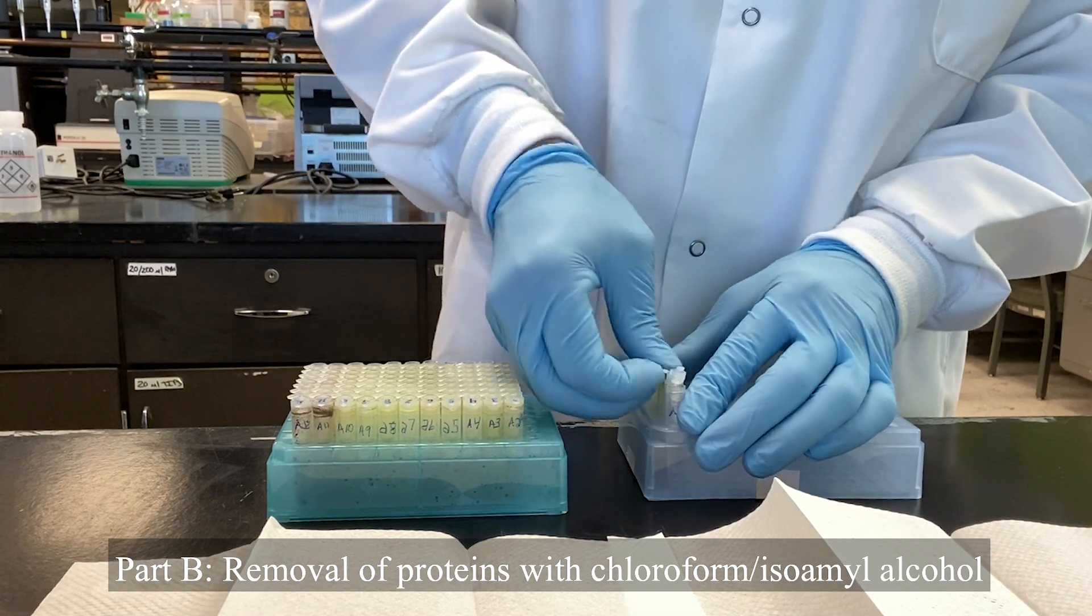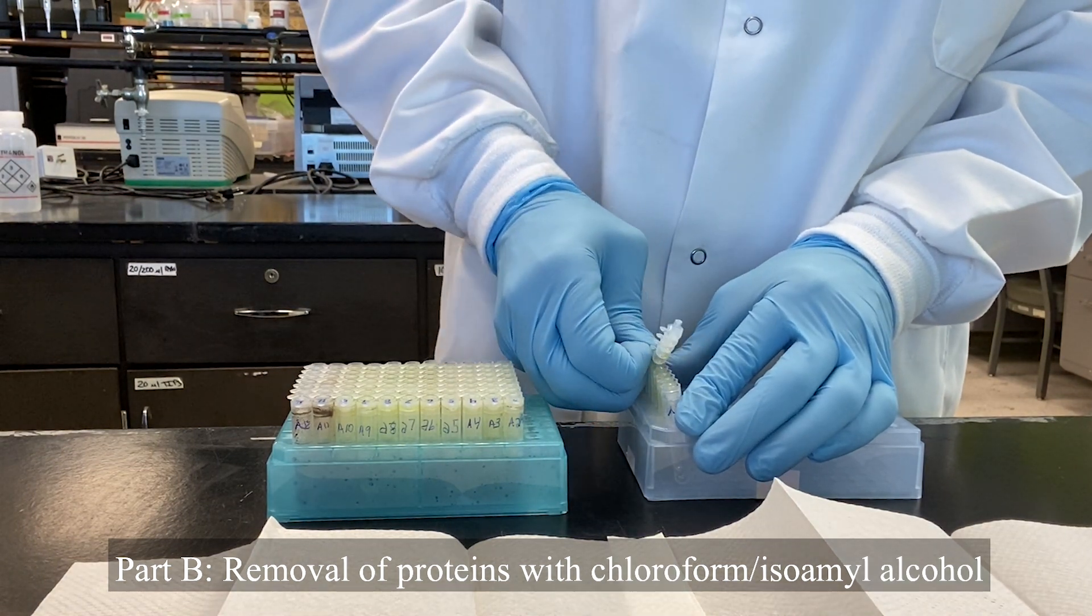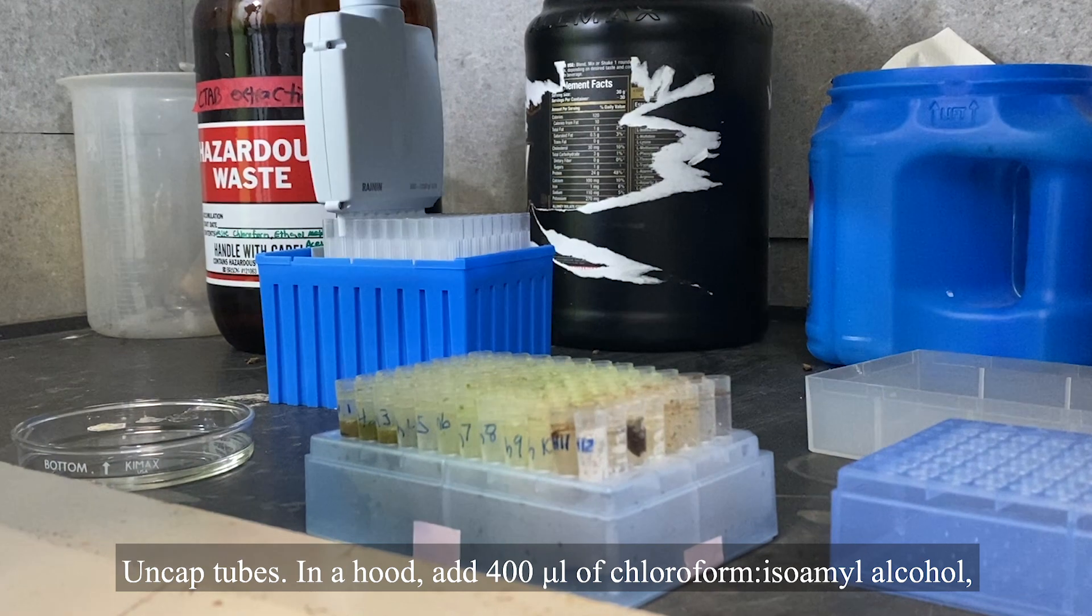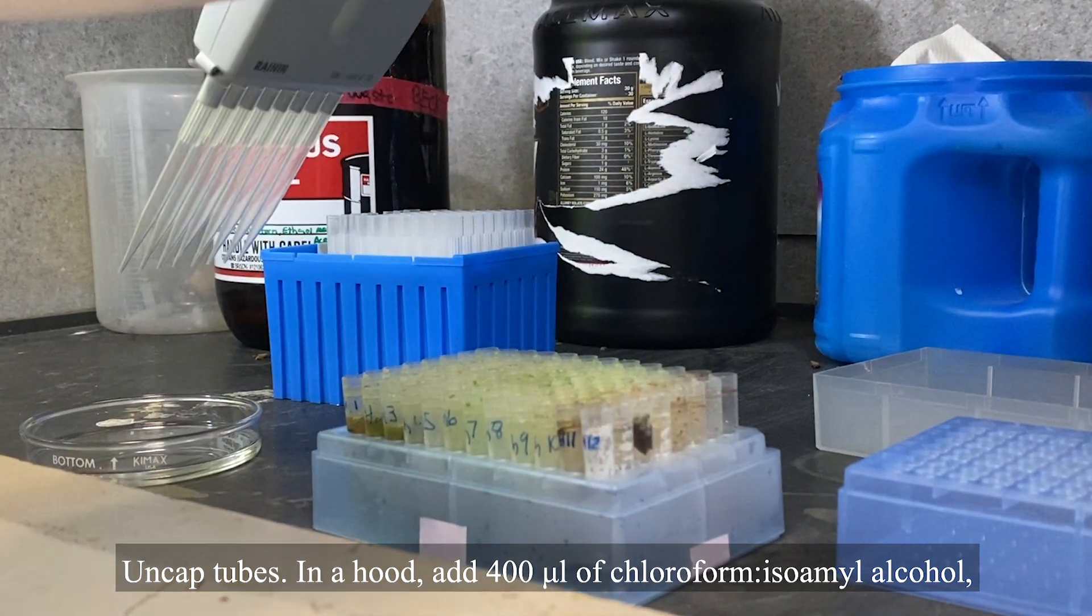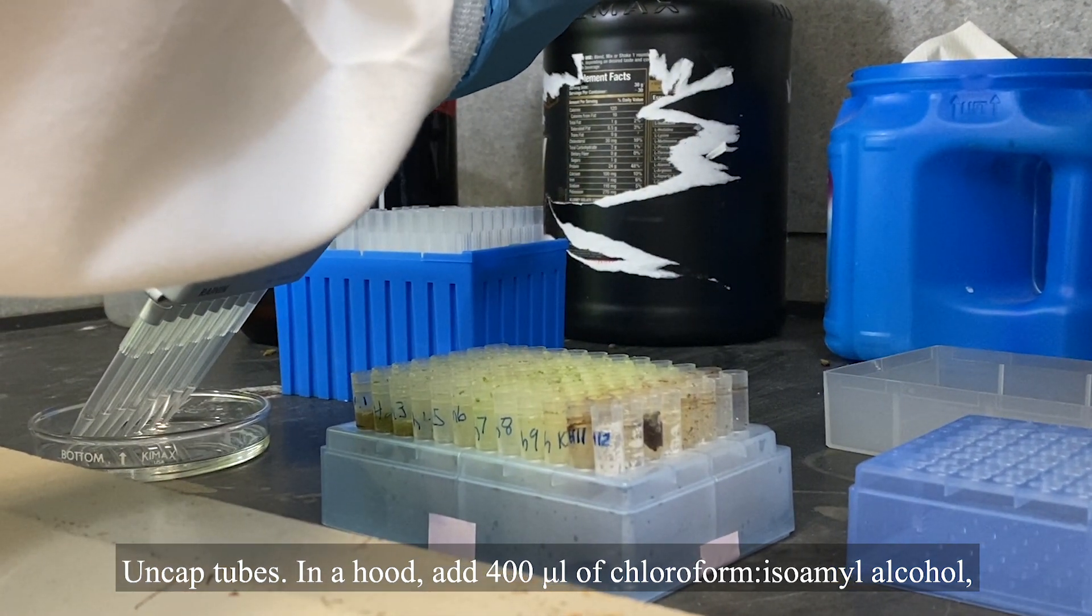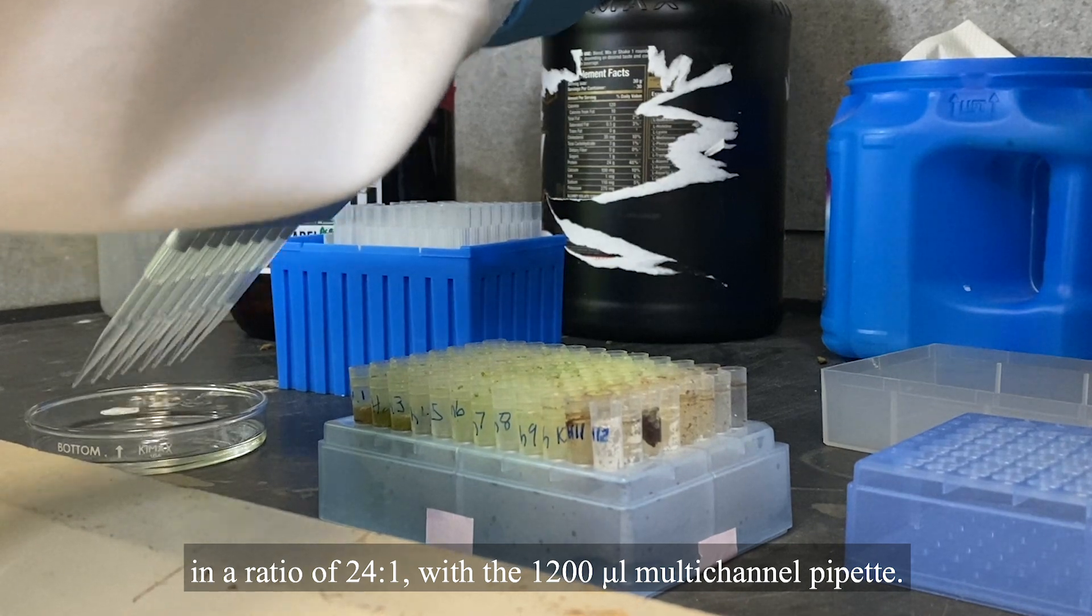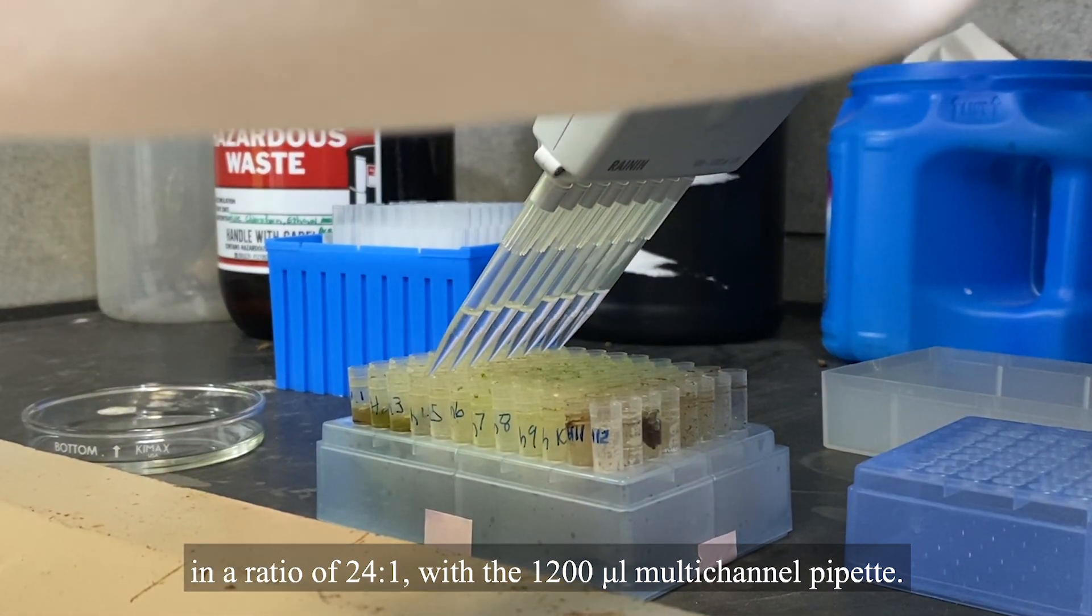Part B, removal of proteins with chloroform isoamyl alcohol. Uncapped tubes. In a hood, add 400 microliters of chloroform isoamyl alcohol in a ratio of 24 to 1 with the 1200 microliter multi-channel pipette.